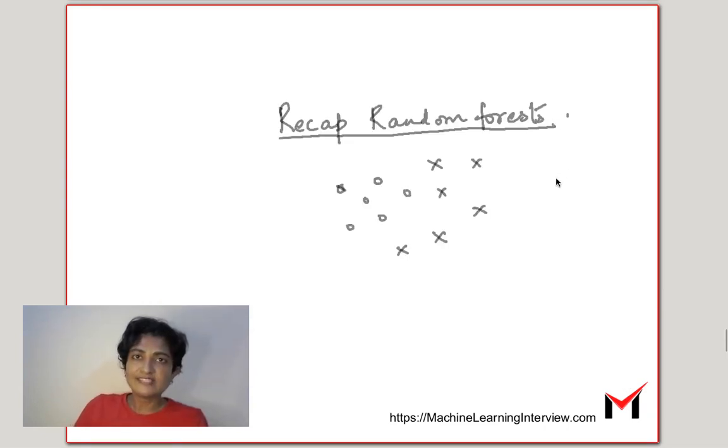Before we go and understand how isolation forests work, let us quickly recap what random forests are. Random forests are a bunch of decision trees. Let us take the example of classification. Decision trees can also be used for regression, but if you have a classification example, decision tree partitions the data, keeps partitioning the data one feature at a time until each partition is homogeneous.